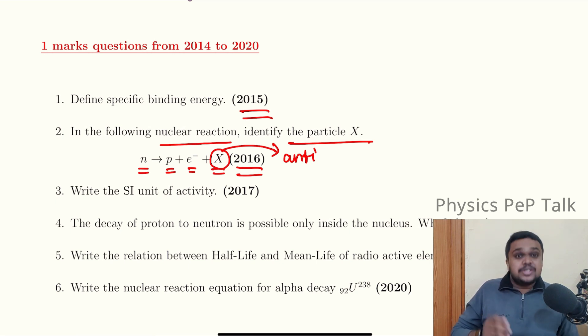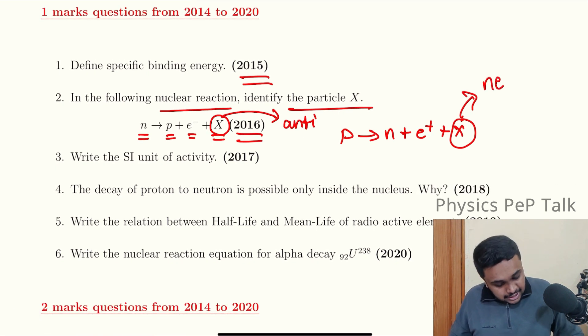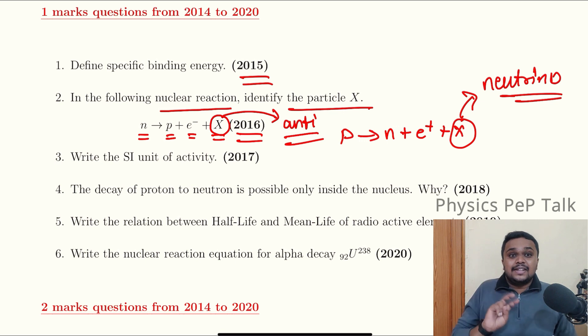Similarly, if a proton is disintegrating into a neutron plus a positron plus an unknown element, this unknown element will be called the neutrino. So if it is anti-neutrino in one reaction, it is a neutrino in the other. There is a huge probability this one mark question will appear.